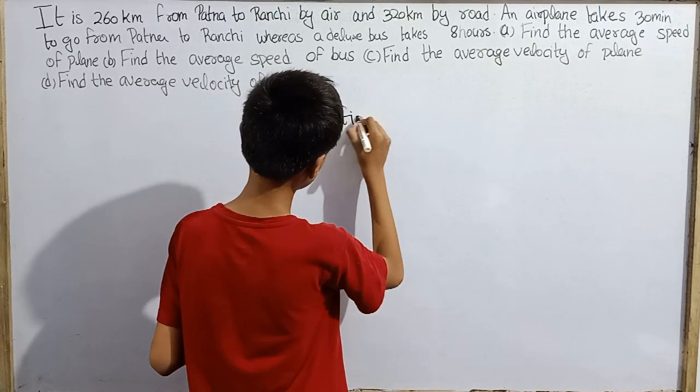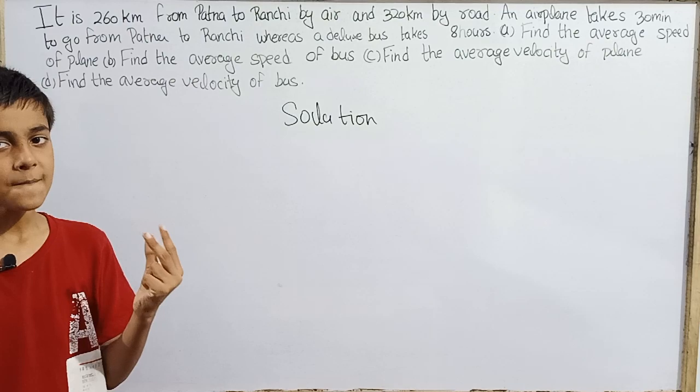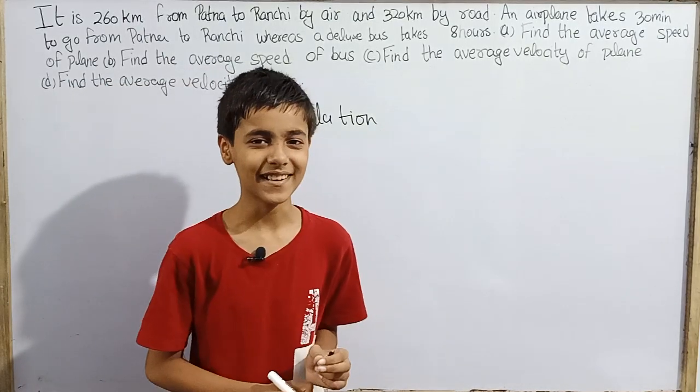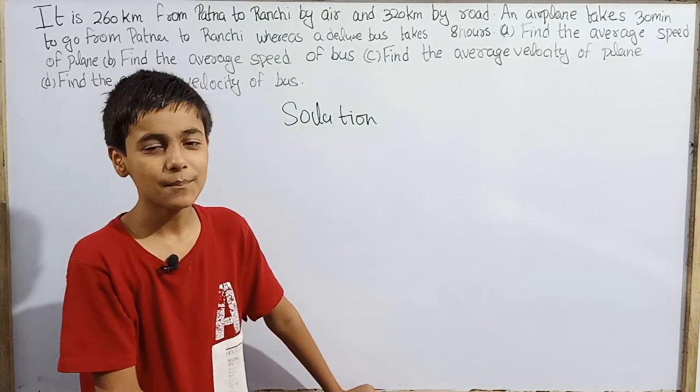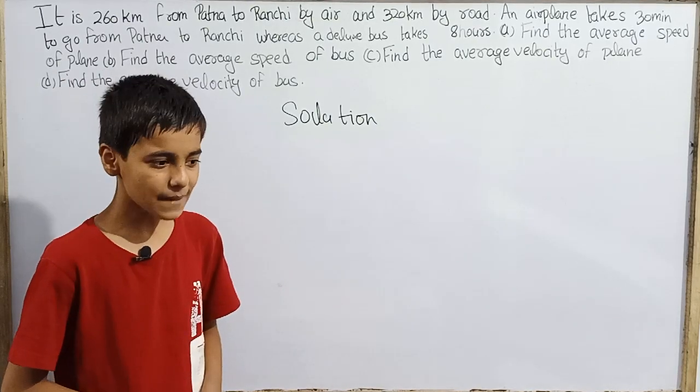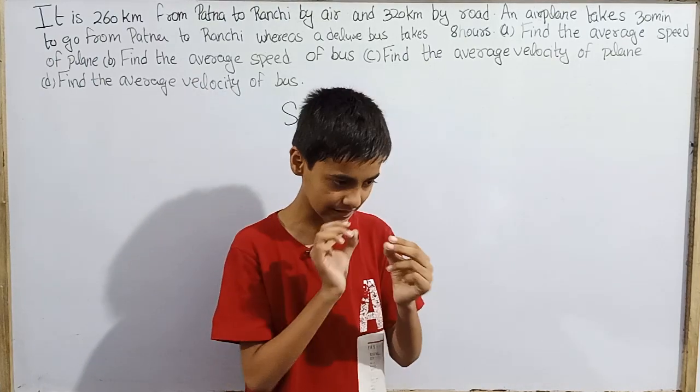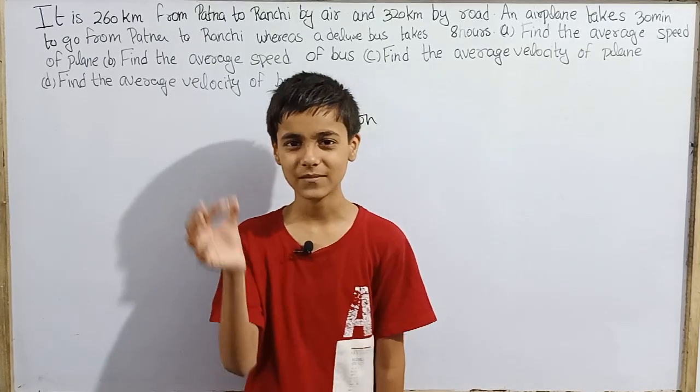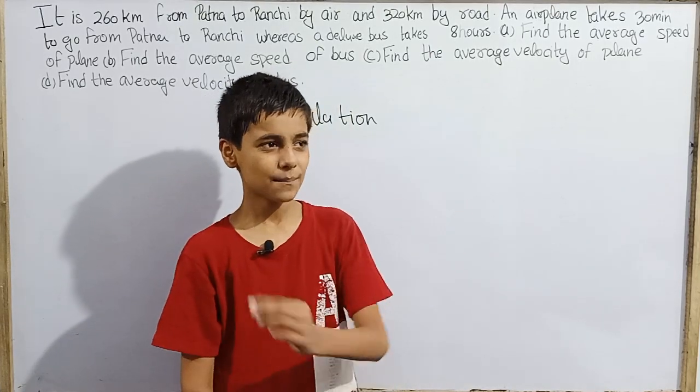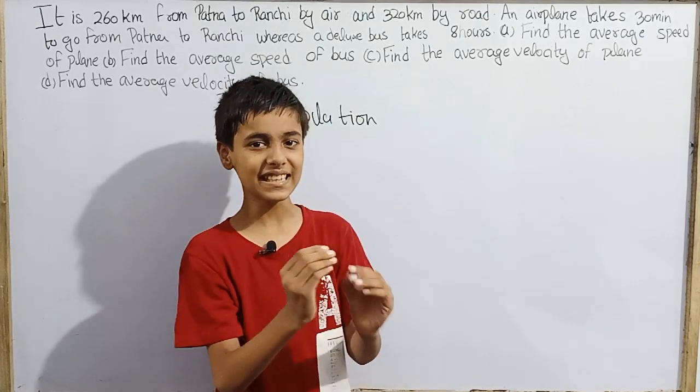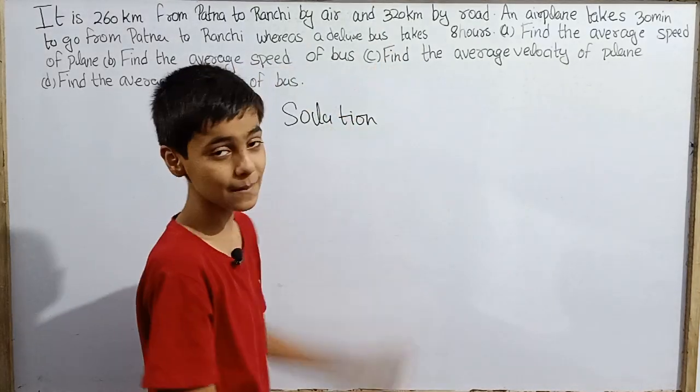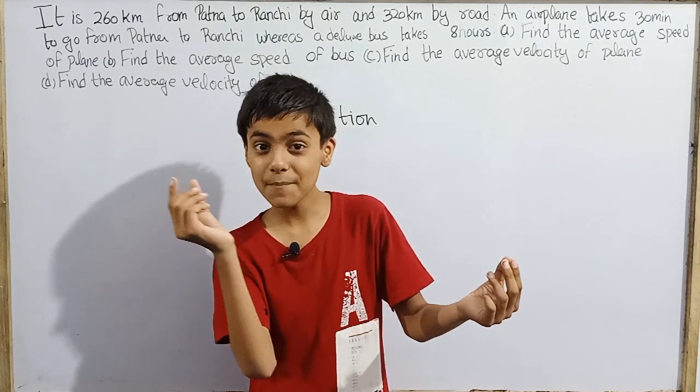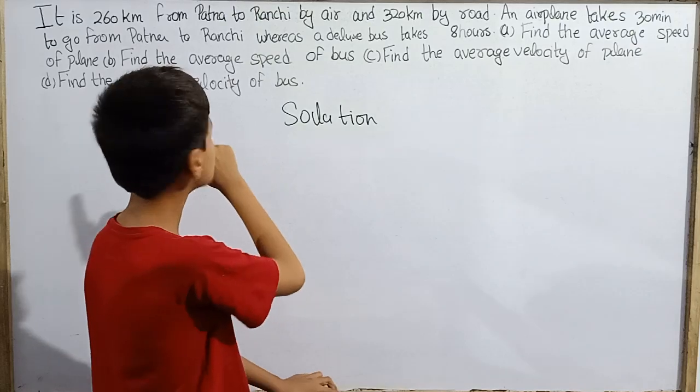We suppose Patna to Ranchi. Now it is given here that if I have traveled from air, then I will cover it only 260 km from Patna to Ranchi. But the fun fact comes when I travel from road by bus, deluxe bus. Now it becomes 320 km here. The reason is that when we travel from air, airplanes generally are straight line, straight line motion, straight direction. But if there is a bus on the road, we have to take a turn. Our total path is extended, this becomes 320 km. But if this bus without taking any turns, straight line moves, then the bus displacement would be the same as that airplane. It is 260 km.